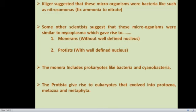As we know, Monera includes organisms without a well-defined nucleus and they come under the prokaryotic category, while Protista are with a well-defined nucleus and come under the eukaryotic category. The Monera include prokaryotic bacteria and cyanobacteria. The Protista gave rise to eukaryotes, which later on developed into Protozoa, Metazoa, and Metaphyta.